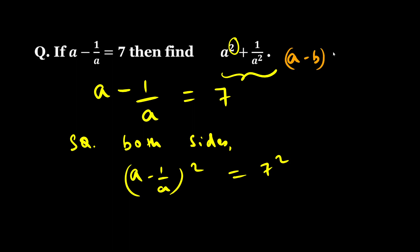That would be a squared plus b squared minus 2ab. Okay, so here I can do a squared plus 1 by a squared minus 2a into 1 by a equals 49.